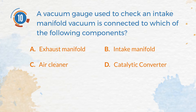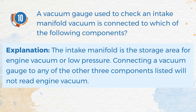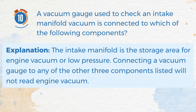The correct answer is B. Intake manifold. Explanation: The intake manifold is the storage area for engine vacuum or low pressure. Connecting a vacuum gauge to any of the other three components listed will not read engine vacuum.